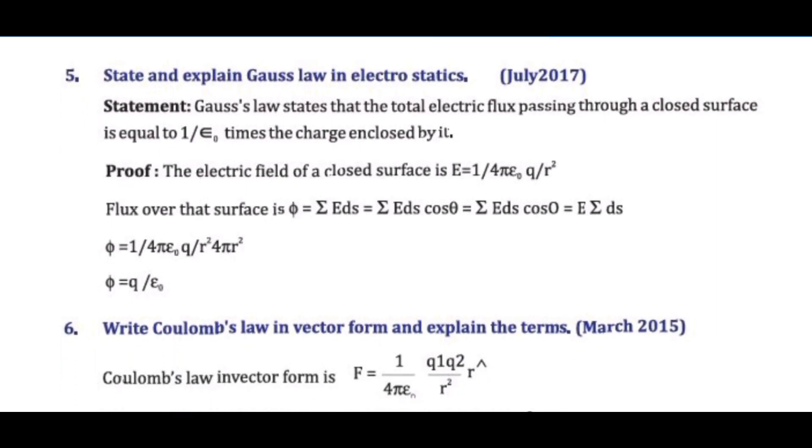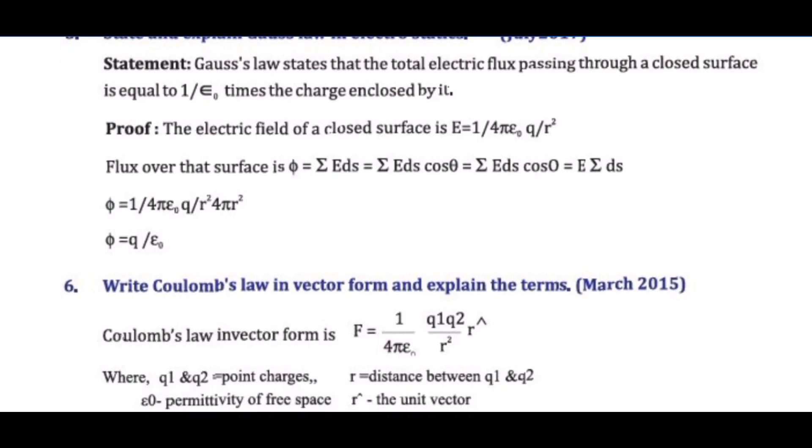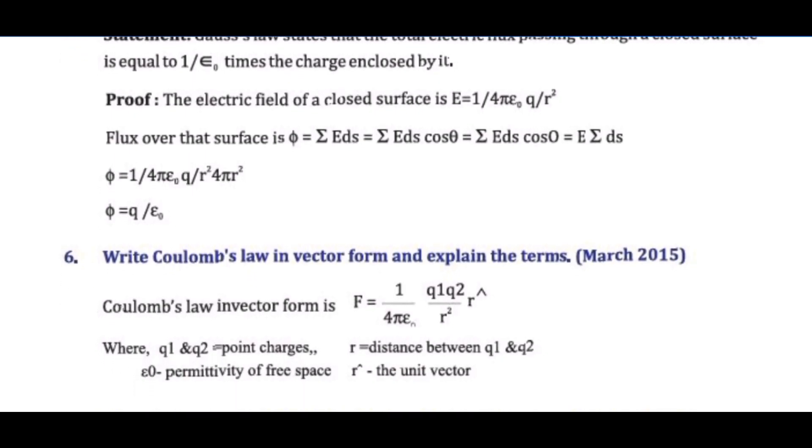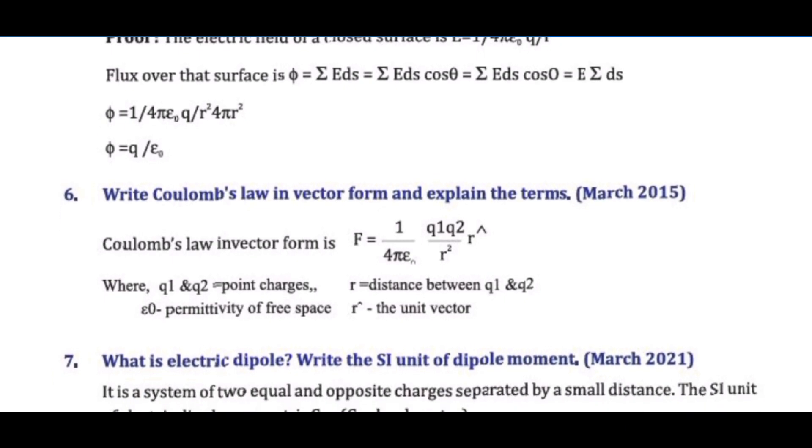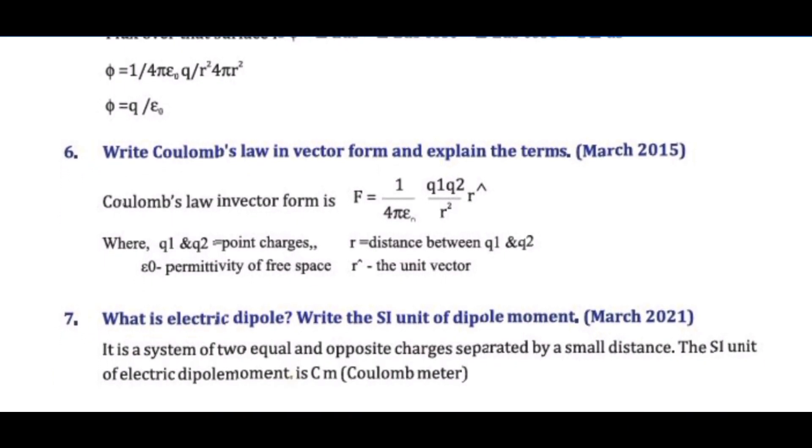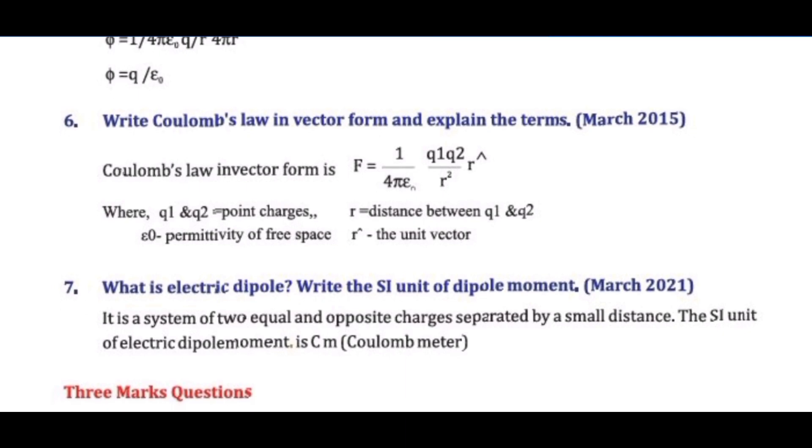Question 6: Write Coulomb's law in vector form and explain the terms. Answer: To be written with vector equation: F equals 1 over 4 pi epsilon 0 times q1 q2 over r squared times r hat. Explain terms like F, q1 and q2, r, epsilon 0, r hat.